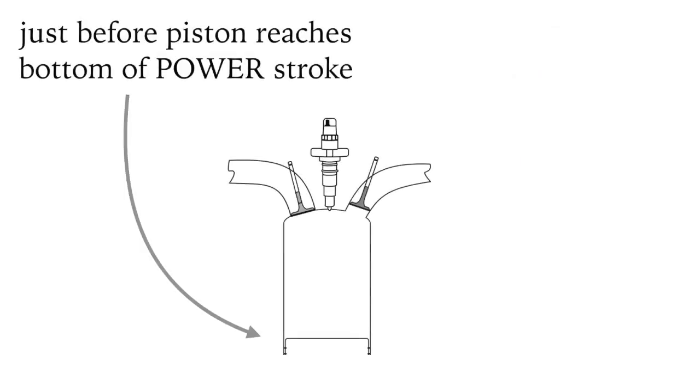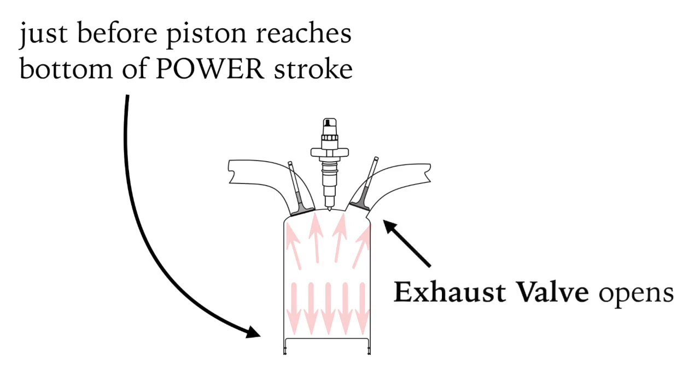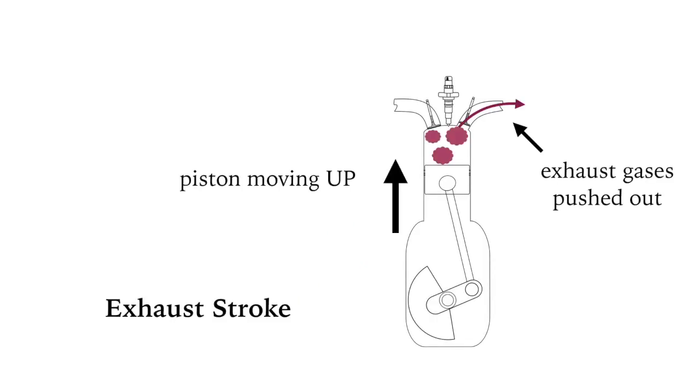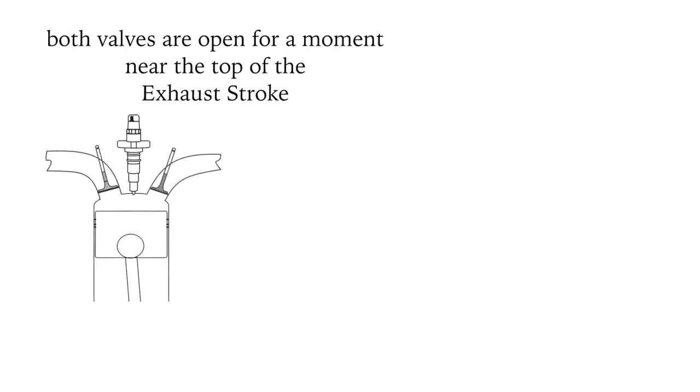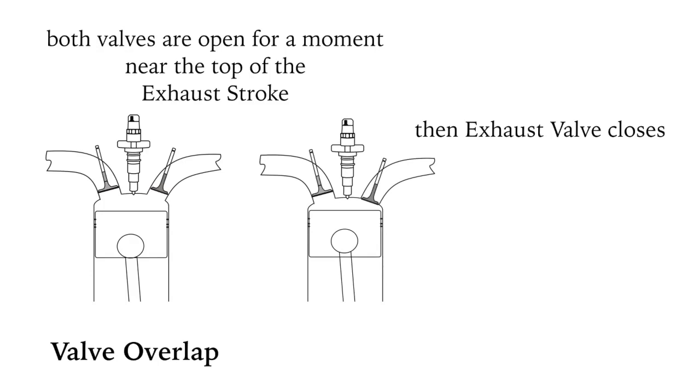Just before the piston reaches the bottom of the power stroke, the exhaust valve opens. It's important to give as much time as possible to clear all the exhaust gases out of the cylinder. The exhaust gases get pushed out as the piston moves back up with the exhaust valve open. No surprise, it's called the exhaust stroke. Just for a moment, both valves are open at the top of the exhaust stroke. This is called valve overlap. Then the exhaust valve closes while the intake valve is still open and then we're back where we started, filling the cylinder with air rich with oxygen.